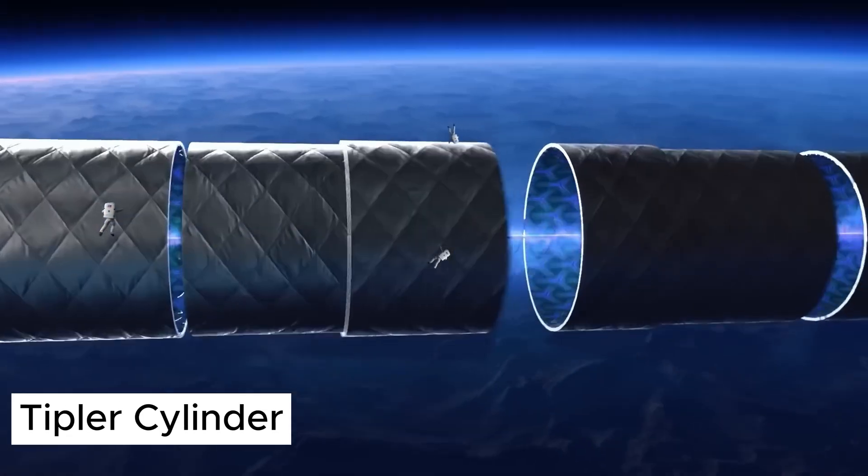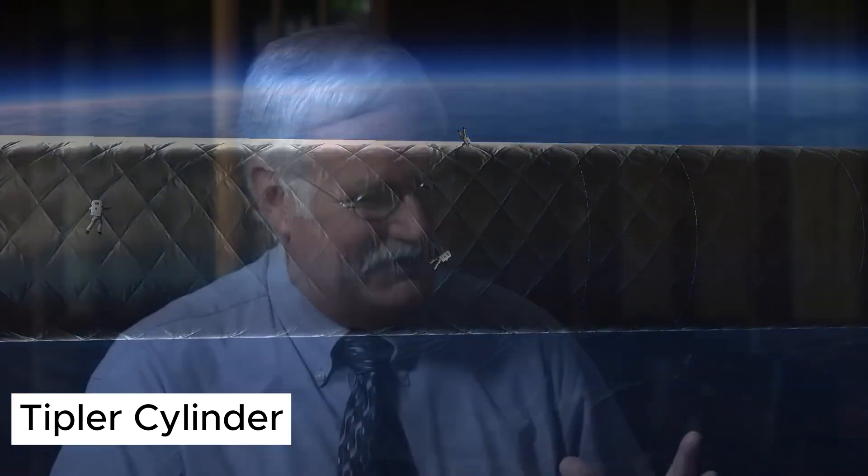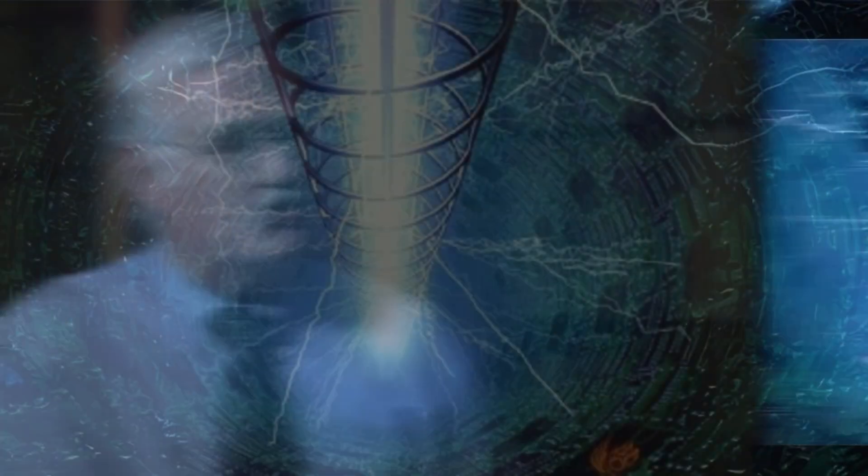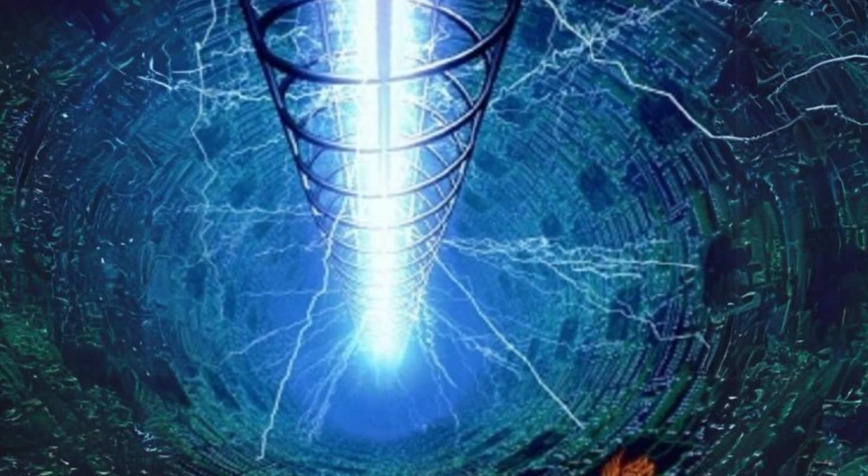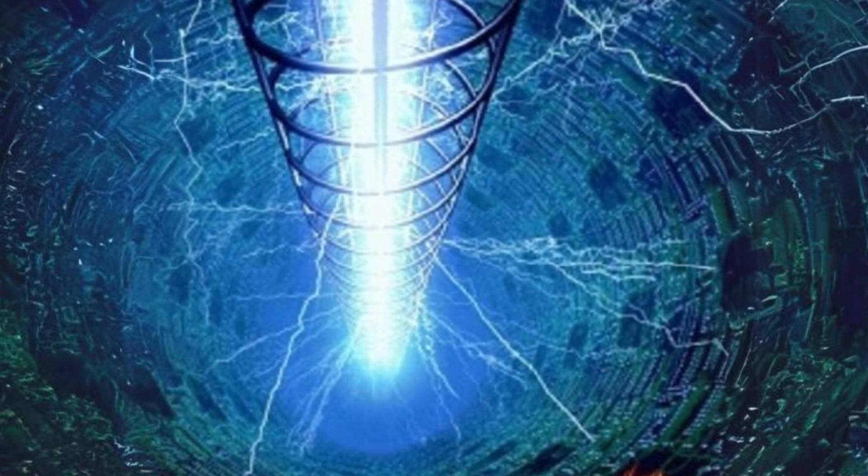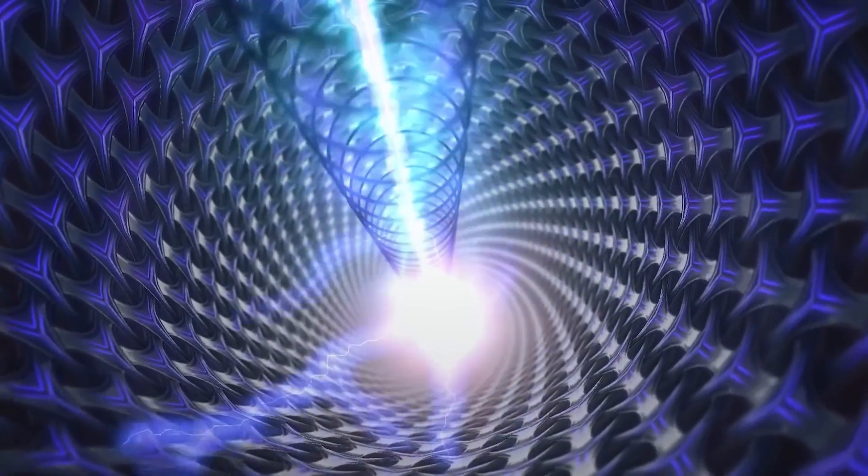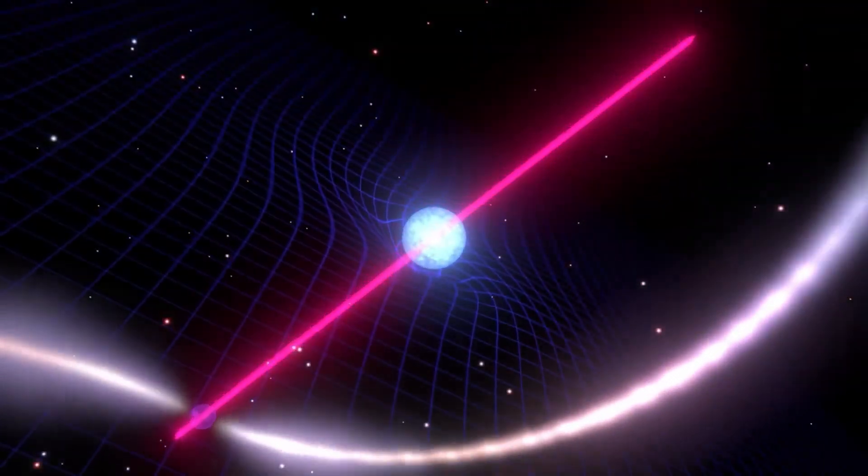This is called the Tipler Cylinder, or Tipler Time Machine, proposed in 1974 by the American physicist Frank J. Tipler. In essence, the Tipler Cylinder is a very large, very long, and very dense cylinder, rotating around its vertical axis at an extremely high speed, approaching the speed of light. According to Albert Einstein's general theory of relativity, a rotating massive object can drag the structure of time around it.